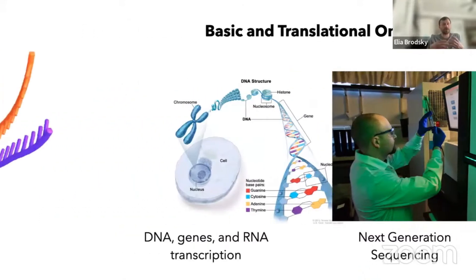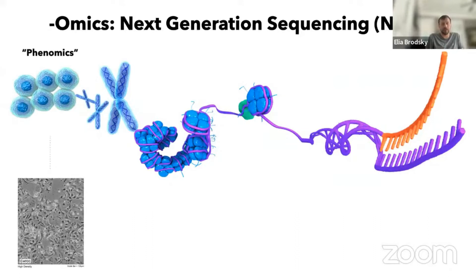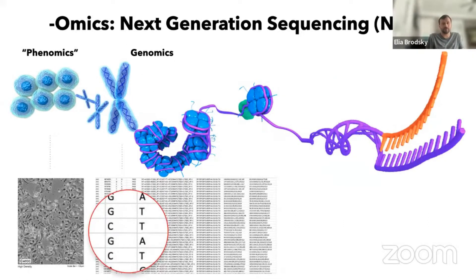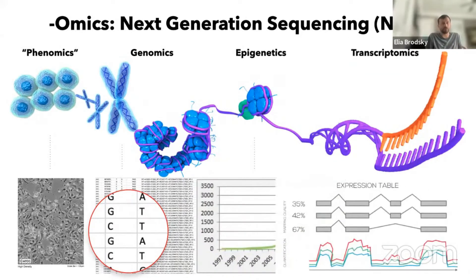Collectively, we call these data types generated by next generation sequencing 'omics.' These omics data can be applied to different levels of what happens within the cell — for example, in a whole tissue, or specific to an individual cell. That's where we have single cell technologies like single cell genomics and single cell transcriptomics.